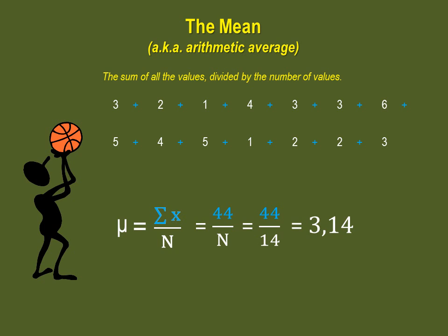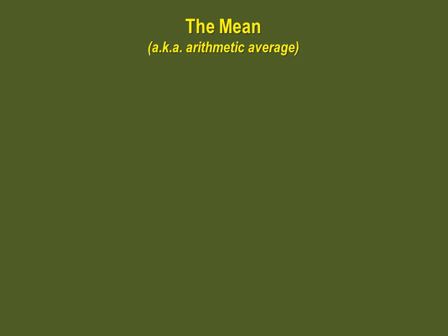You'll notice that 3.14 is not an actual value of our data set. This is one of the characteristics of means. Another characteristic of the mean is that it can be influenced by extreme values — very big or very small values. This is especially true when our N is small.